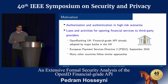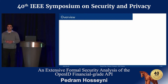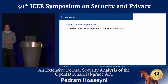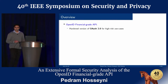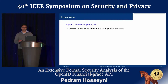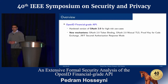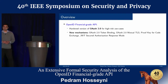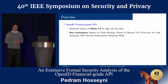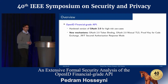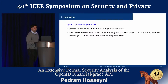The Financial Grade API is essentially a hardened version of OAuth for high-risk environments. For achieving the degree of security that is needed here, there are many new security mechanisms incorporated into the basic OAuth flow.